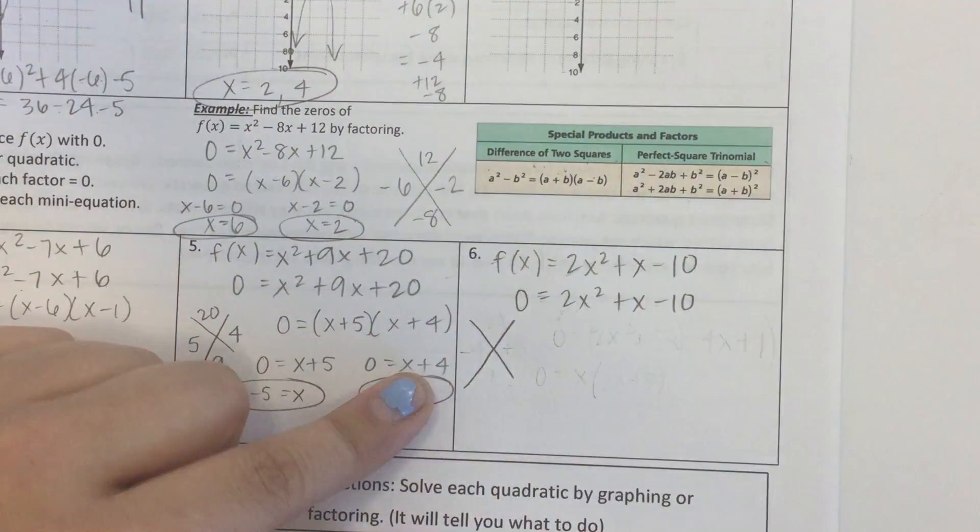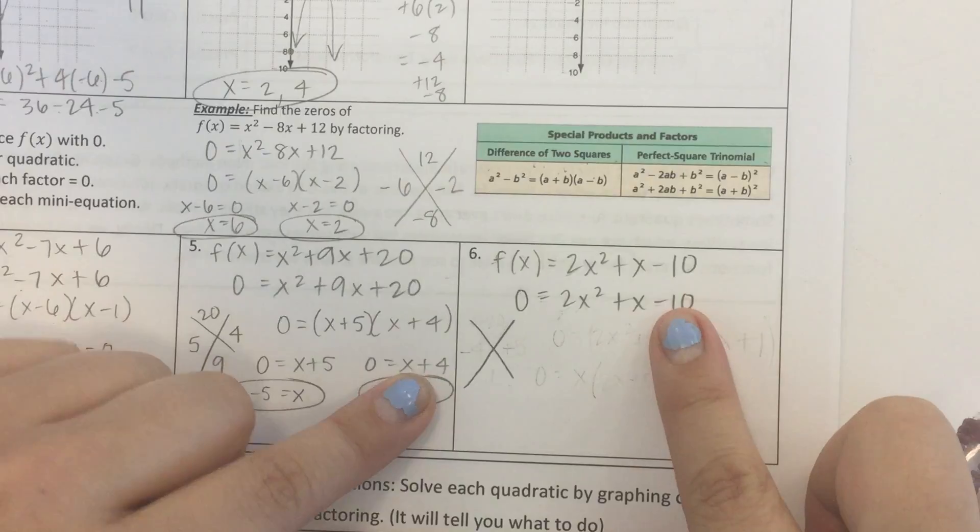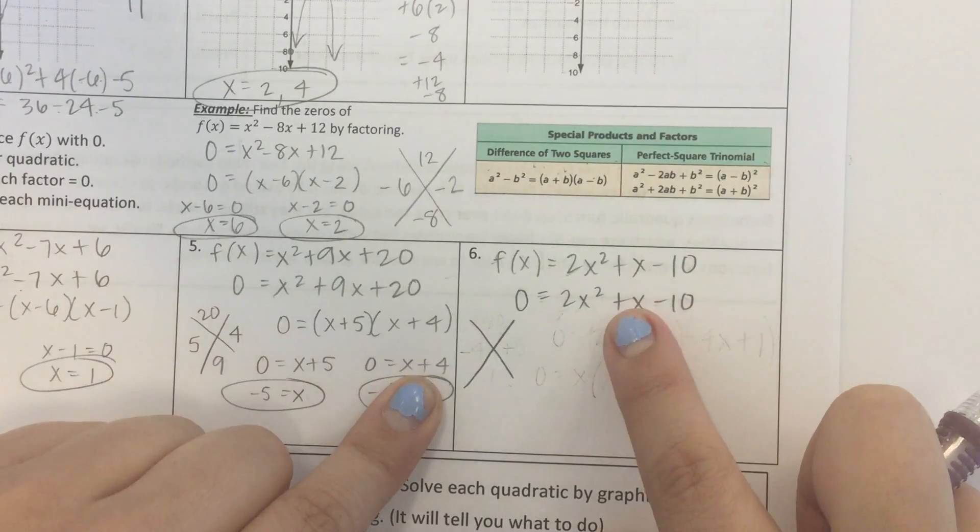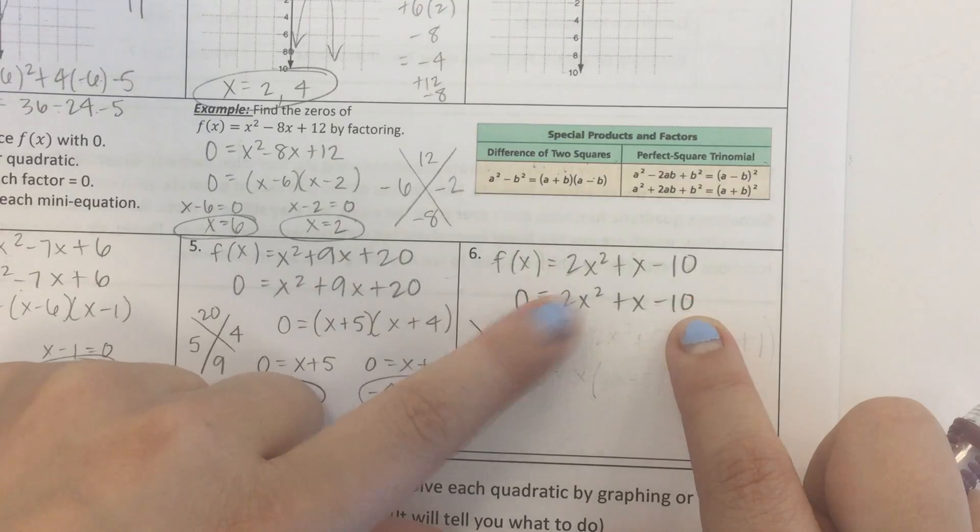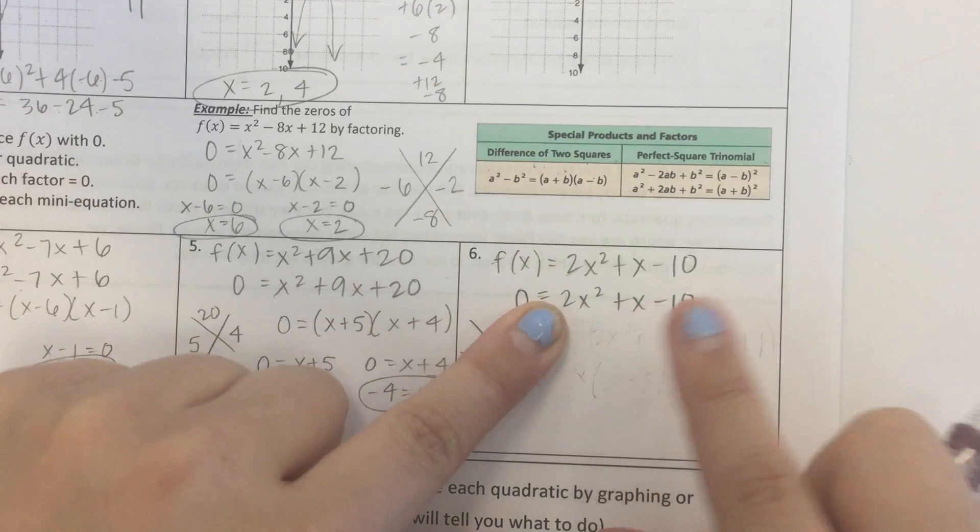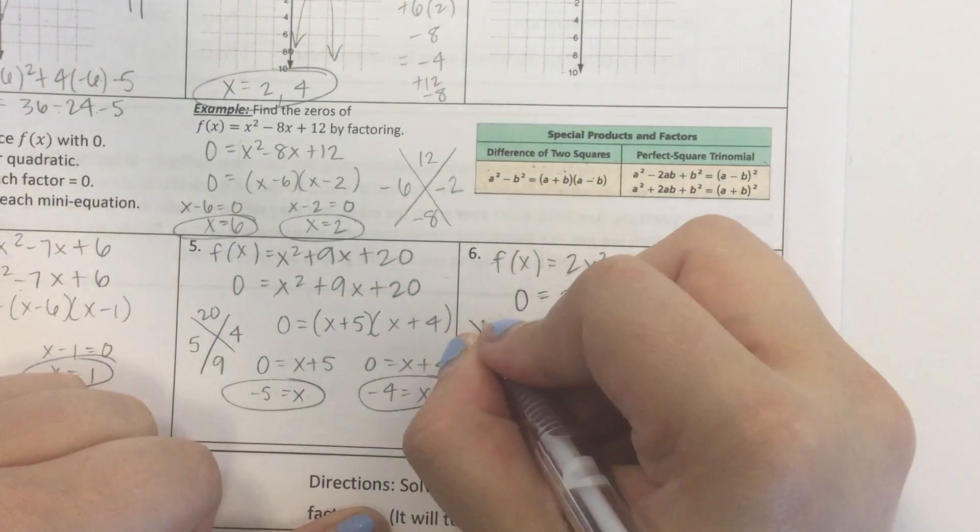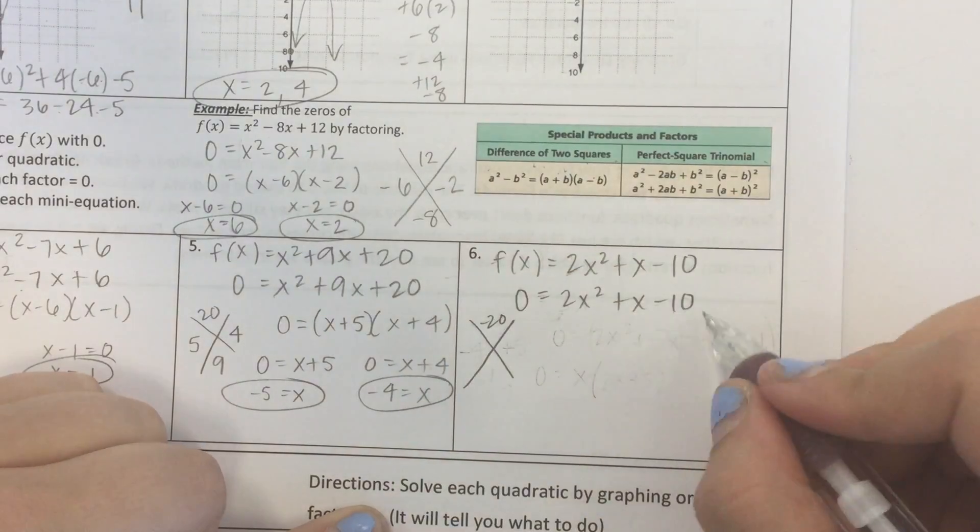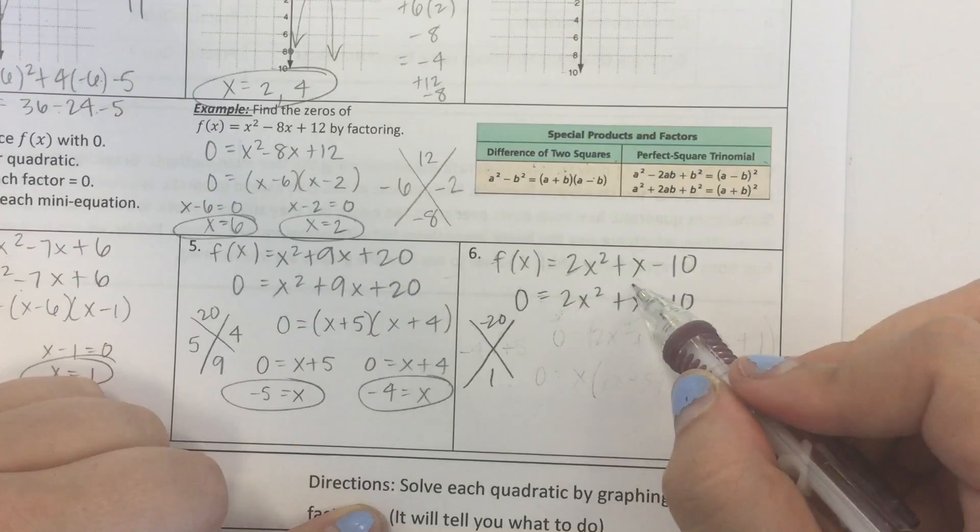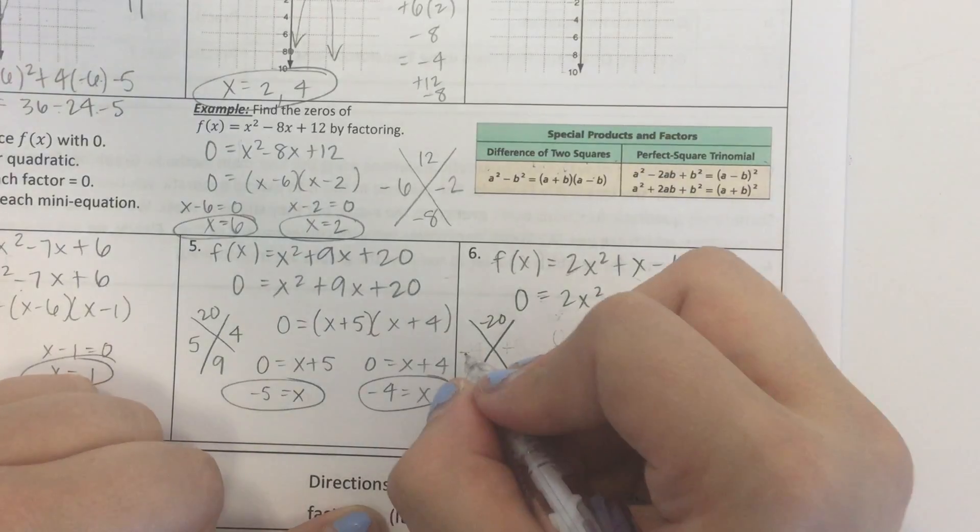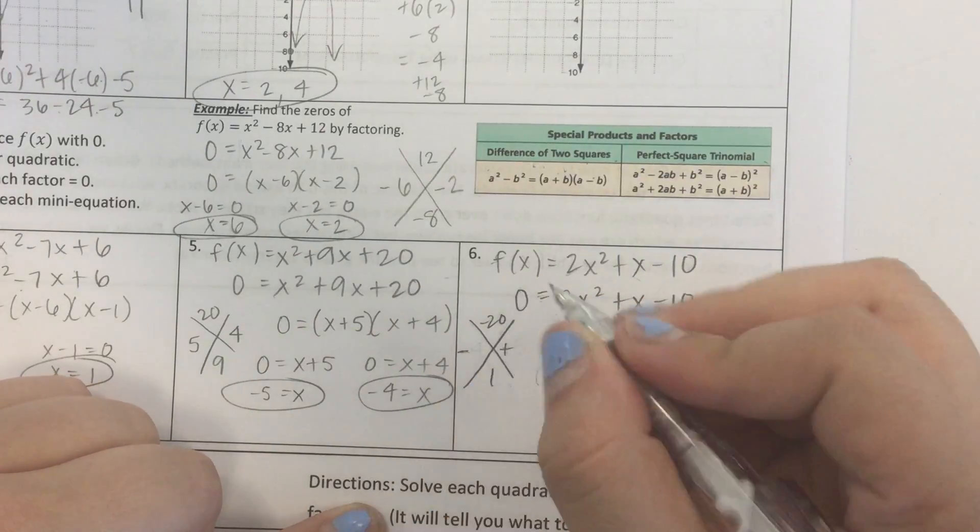So let's make our little x. Instead of trying to figure out what multiplies to negative 10 and adds to 1, we're going to figure out what multiplies to negative 10 times 2 and adds to 1. So negative 20 multiplies to negative 20 and adds to 1. Since this guy is positive and this guy is negative, we're going to have a negative number and a positive number.